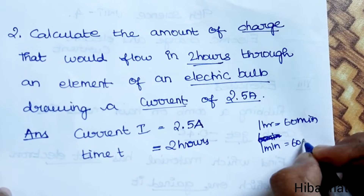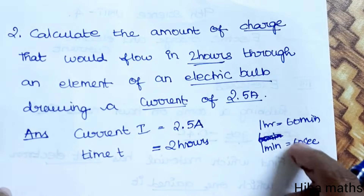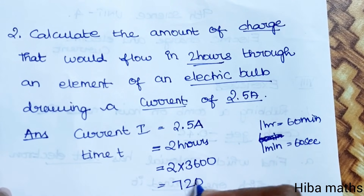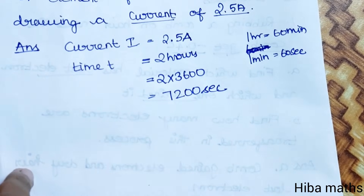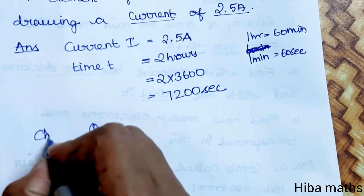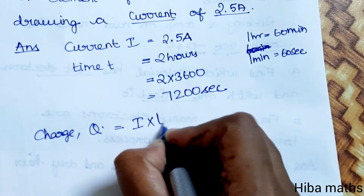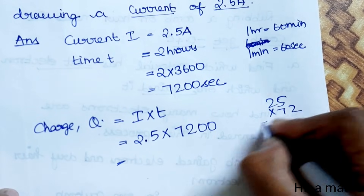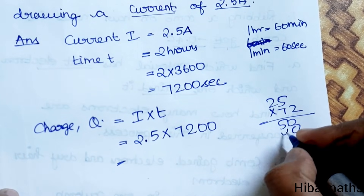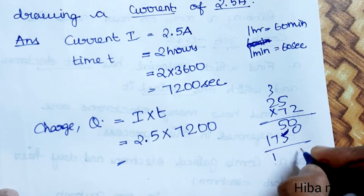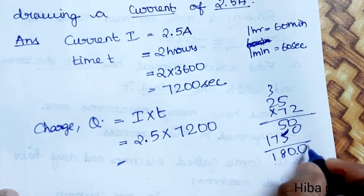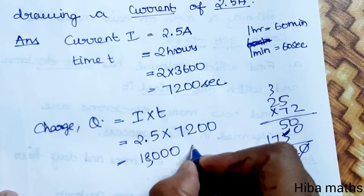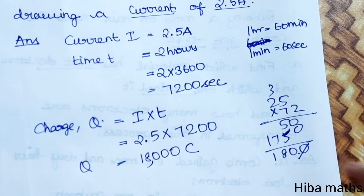For the next problem, time is converted to seconds: 1 hour = 60 minutes, 1 minute = 60 seconds, so 2 hours = 2 × 3600 = 7200 seconds. Charge Q = current × time = 2.5 × 7200 = 18,000 coulombs.